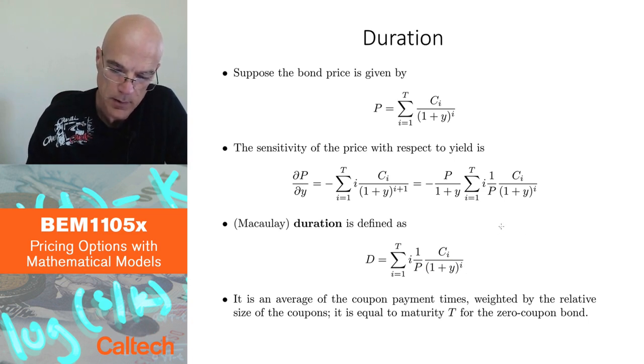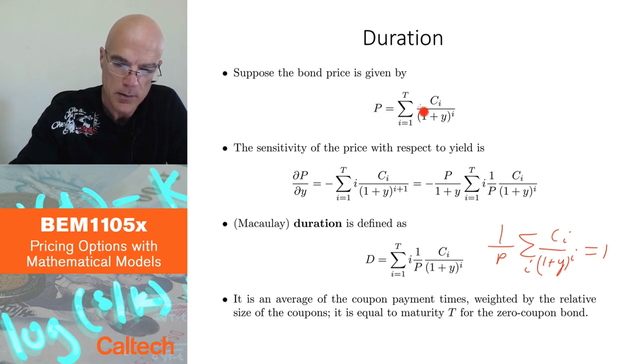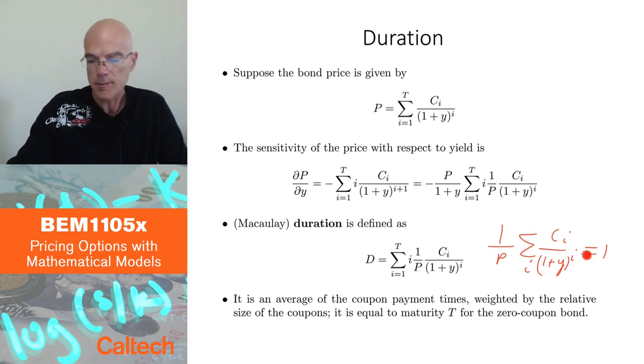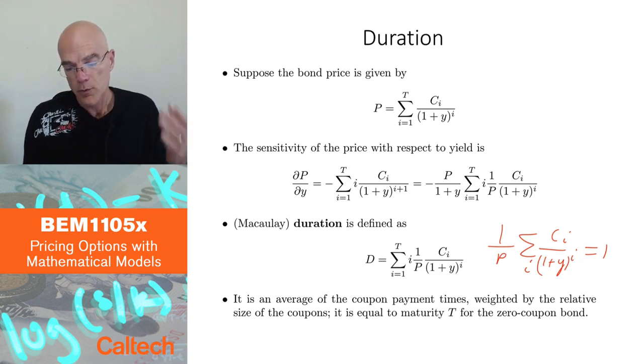If you add them up, if I take 1/P out and then I add Ci/(1+Y)^i, this sum is simply 1. Why? Because of the definition of the bond price or the yield here. If I divide by P, the right hand side is going to be equal to 1. So these factors are adding up to 1, which means this is a weighted average and they are also positive. So this is a weighted average of times of payments weighted by basically by present value of coupons and also normalized by the bond price. You are finding average of the times of payments, but you put more weight on those times which pay more in terms of the present value.